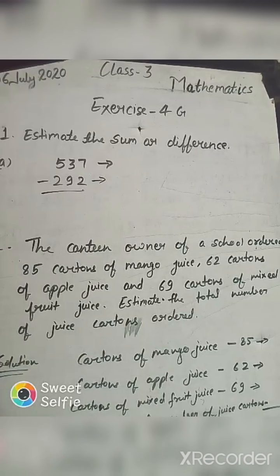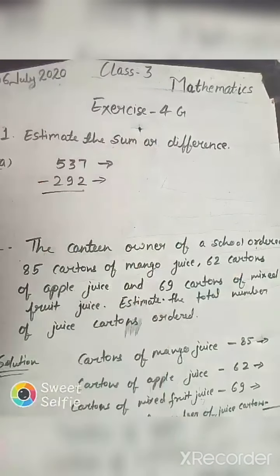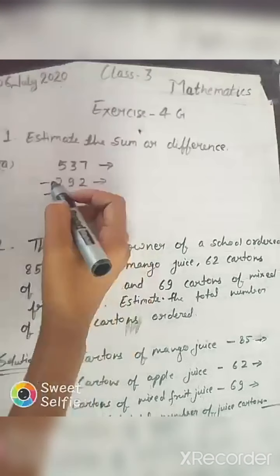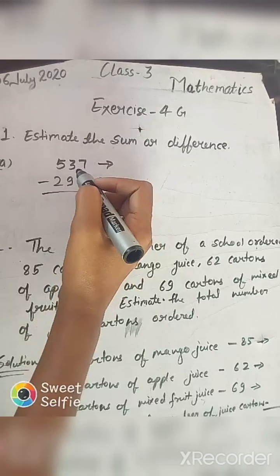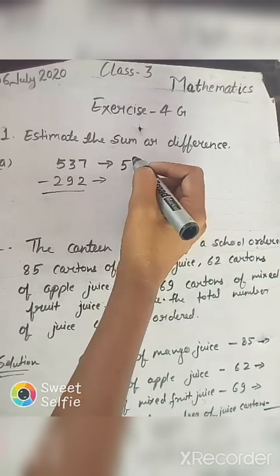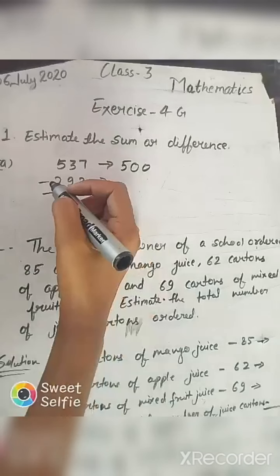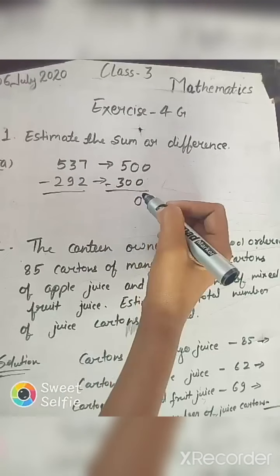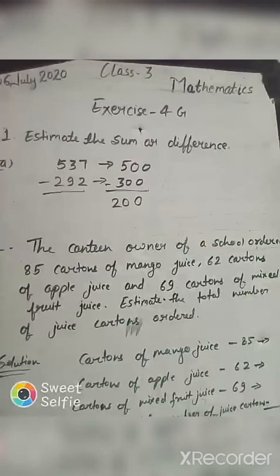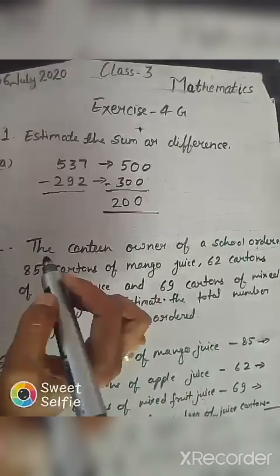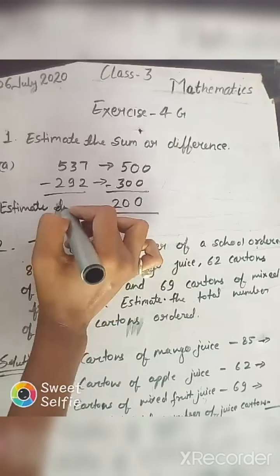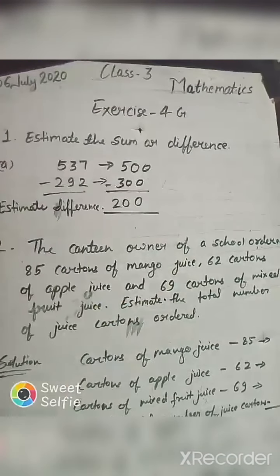Now we will solve exercise 4G. Question number one: estimate the sum or difference of 537 minus 292. Firstly we will round off 537 — it is nearer to 500. And 292 is nearer to 300. Now we will subtract: 500 minus 300 equals 200. So the estimated difference is 200.